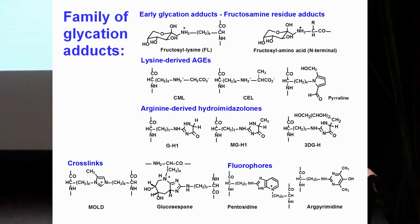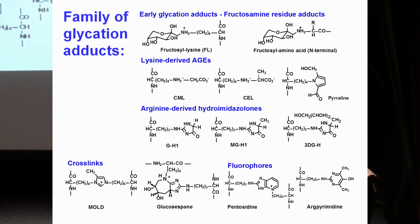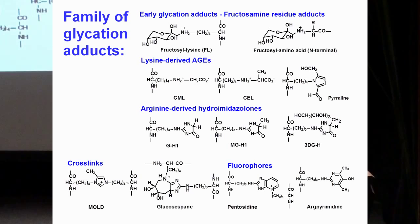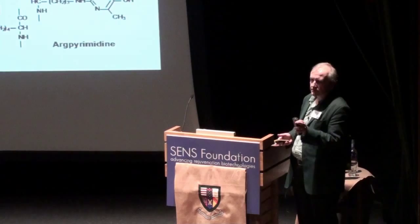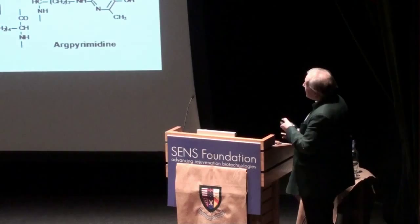Arginine modification is important because bioinformaticians will tell you that arginine has the highest probability of being located in a functional domain of a protein. When arginines are modified this way, they lose their functional role and the protein becomes functionally impaired.